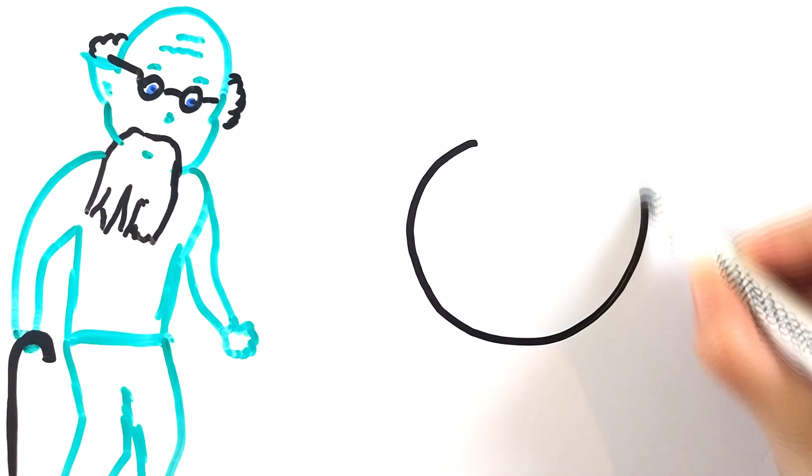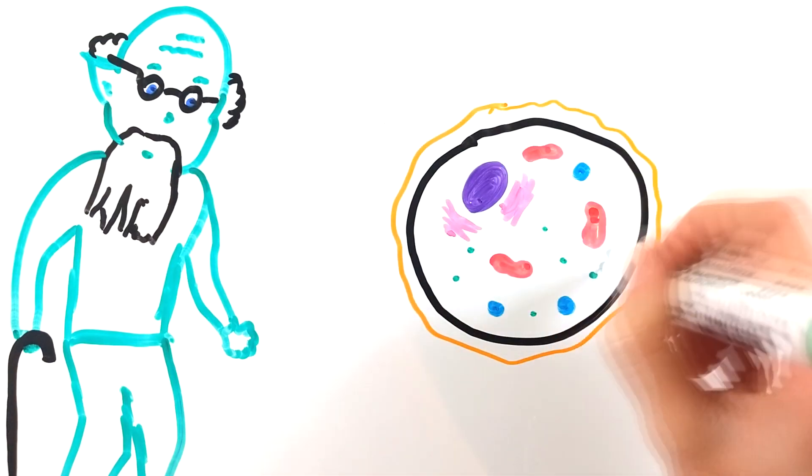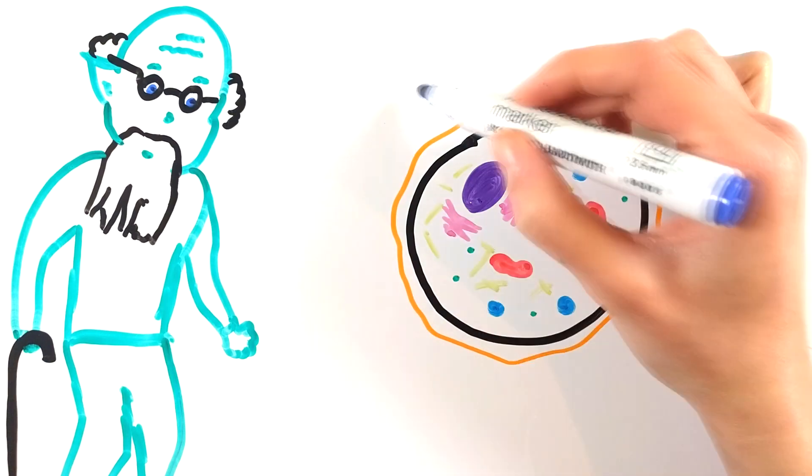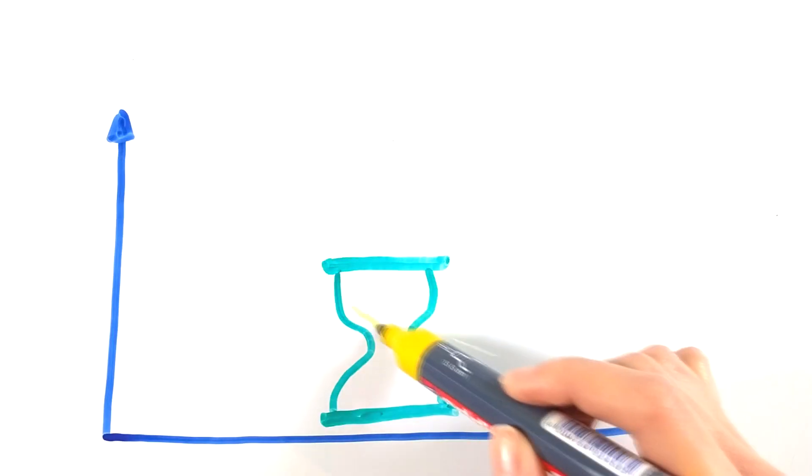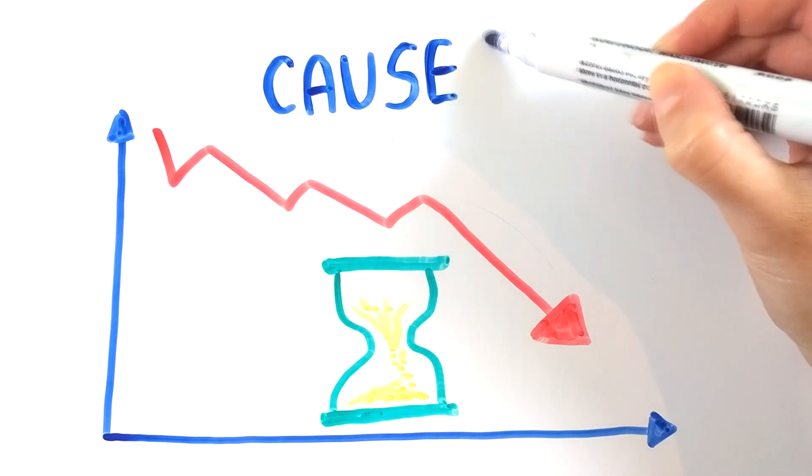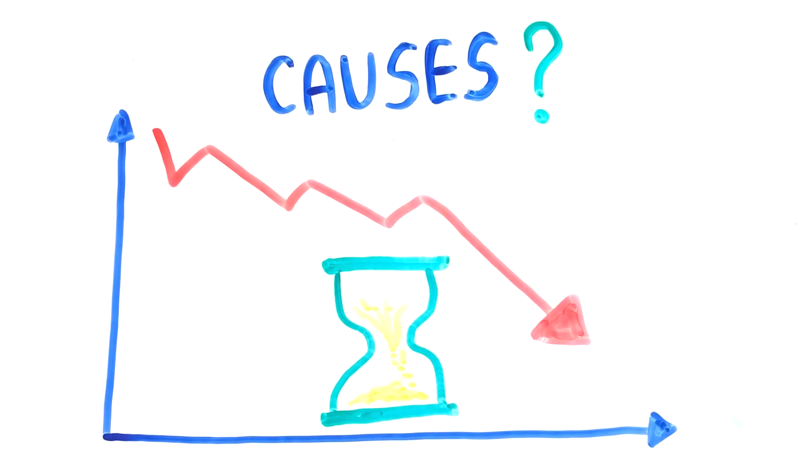The aging process is happening to each and every one of us non-stop, but what is exactly occurring on a cellular level and why do our bodies deteriorate over time? Let's find out what are some of the main causes of aging.